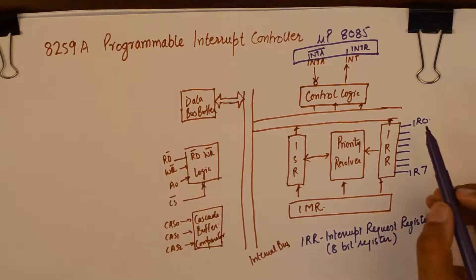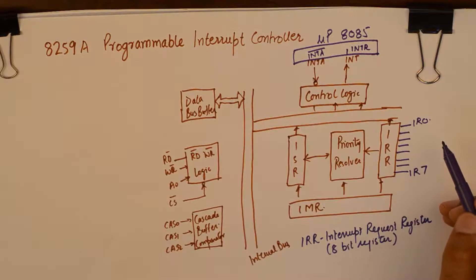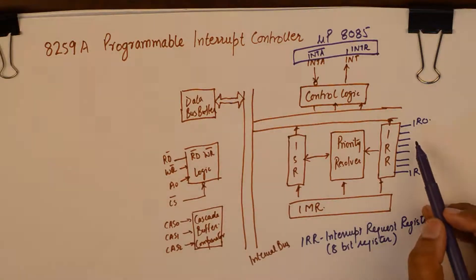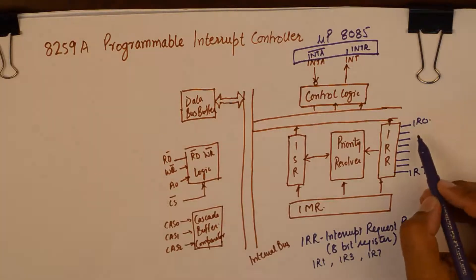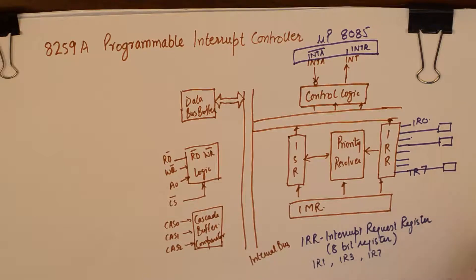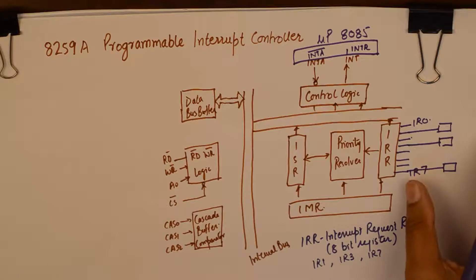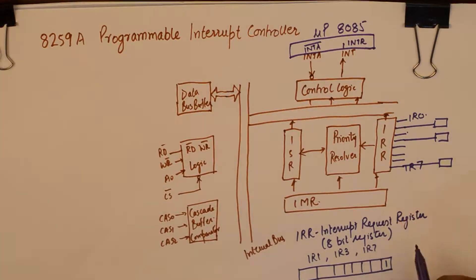Now for example you can connect 8 different peripheral devices here that would want to interrupt your microprocessor at some point in time. Let us say three peripheral devices try to interrupt microprocessor at one point in time. Let us say IR1, IR3 and IR7. Then the peripheral devices connected at these pins are wanting to request the microprocessor services.